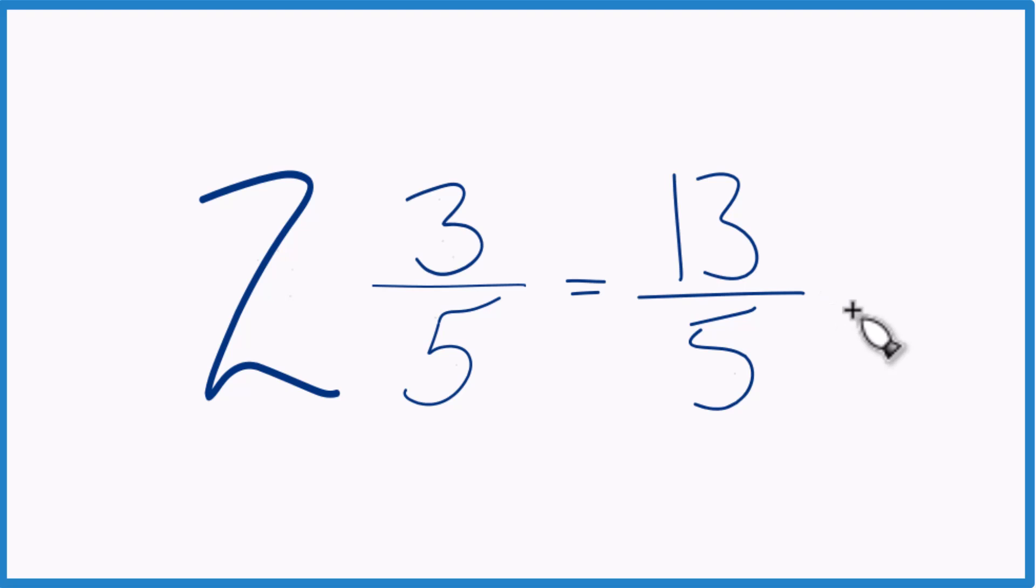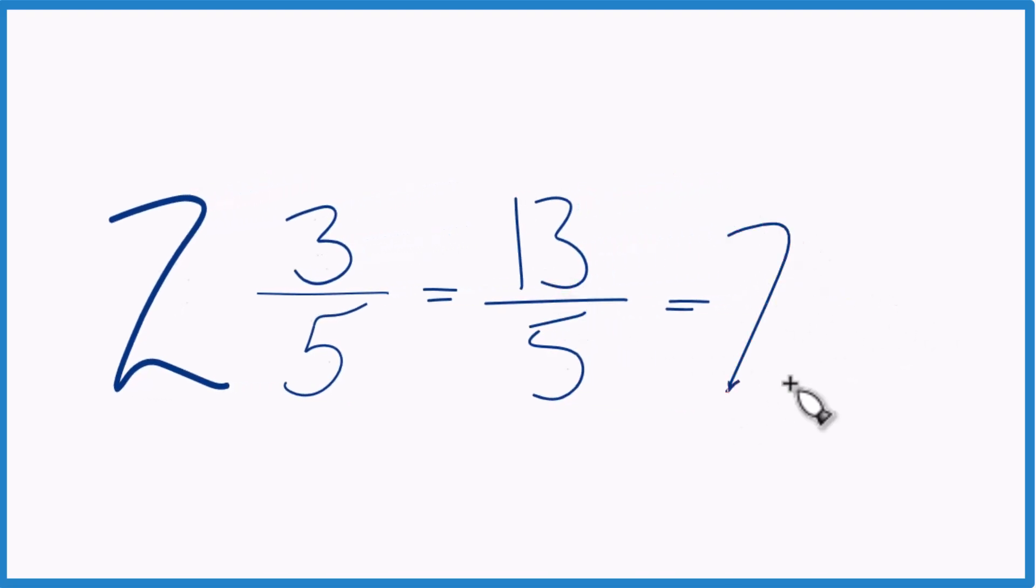We can check our work, too, because 5 goes into 13 twice with 3 left over. Bring the 5 across, 2 and 3 fifths. That's what we started with, and that's it.